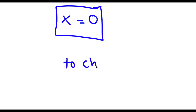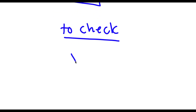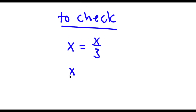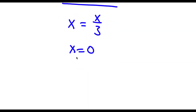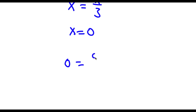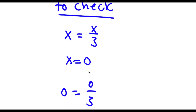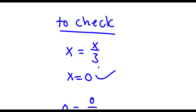Now to check: I had x is equal to x over 3, and the value of x is 0. So now I have 0 is equal to 0 over 3. Zero divided by any number is simply 0, so I have 0 equals 0. And because this is right, I know my solution is right.